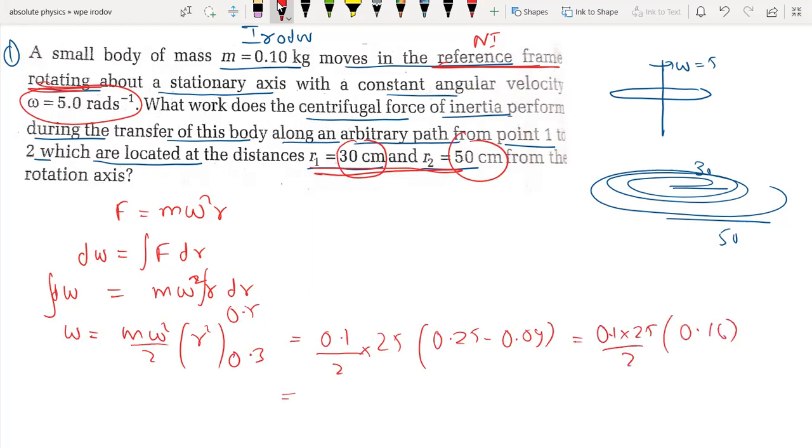This is equal to 0.1 into 25, which is equal to 0.5 into 0.8, which is equal to 0.4.